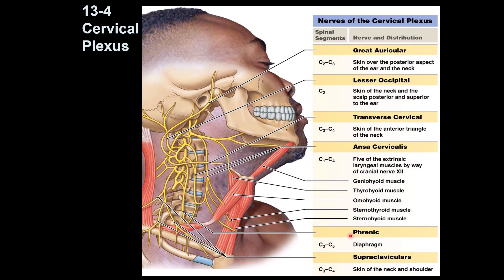The most important motor nerve in the cervical plexus is the phrenic nerve, because it supplies the diaphragm. The diaphragm is the primary respiratory muscle, which means it is essential for breathing. If both sides of the diaphragm are paralyzed, the person cannot breathe and will not survive — so it is critically important.